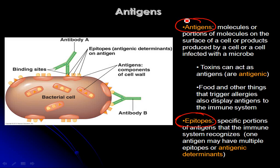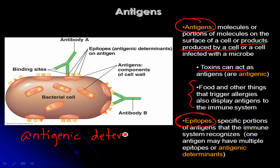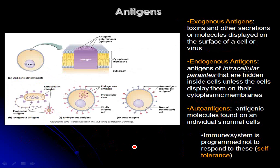Many different types of things can be antigens — they don't have to be on the surface of a microbe or another type of cell. They can also be things produced by a cell and located inside it, especially if the cell is infected with a microbe. They can even include toxins like the diphtheria toxin or the enterotoxin of Staphylococcus aureus, or things on the surfaces of foods we eat, like pollen. Another term for epitope that you may see in your textbook is antigenic determinant.